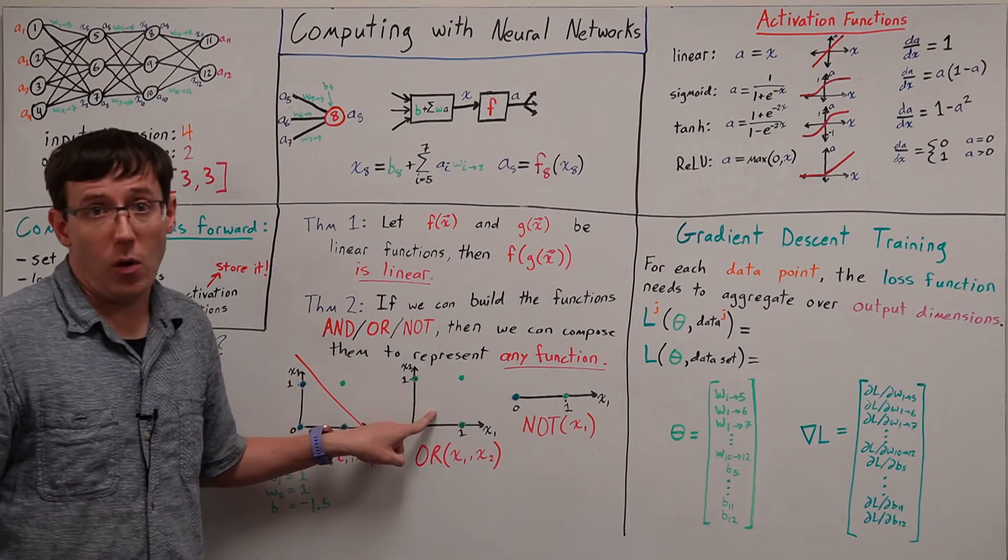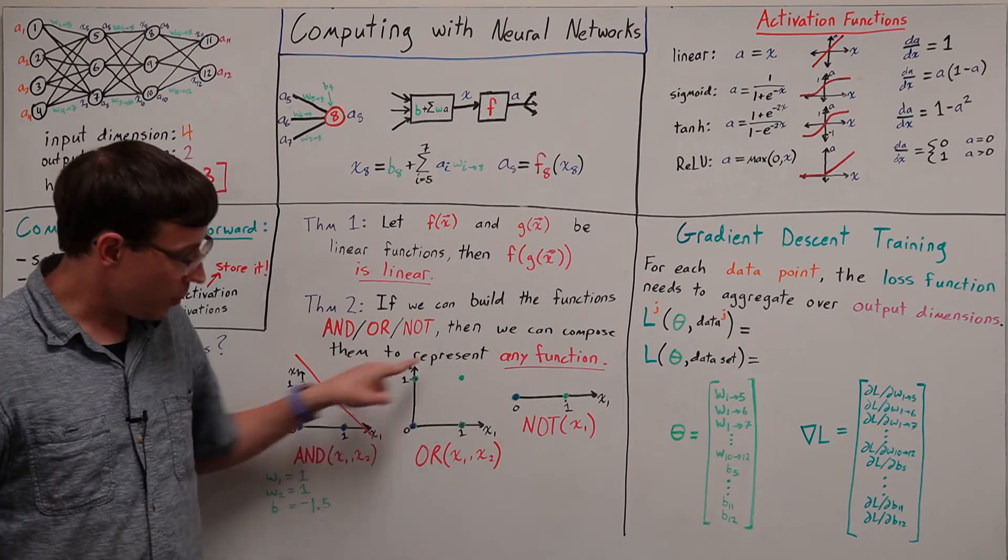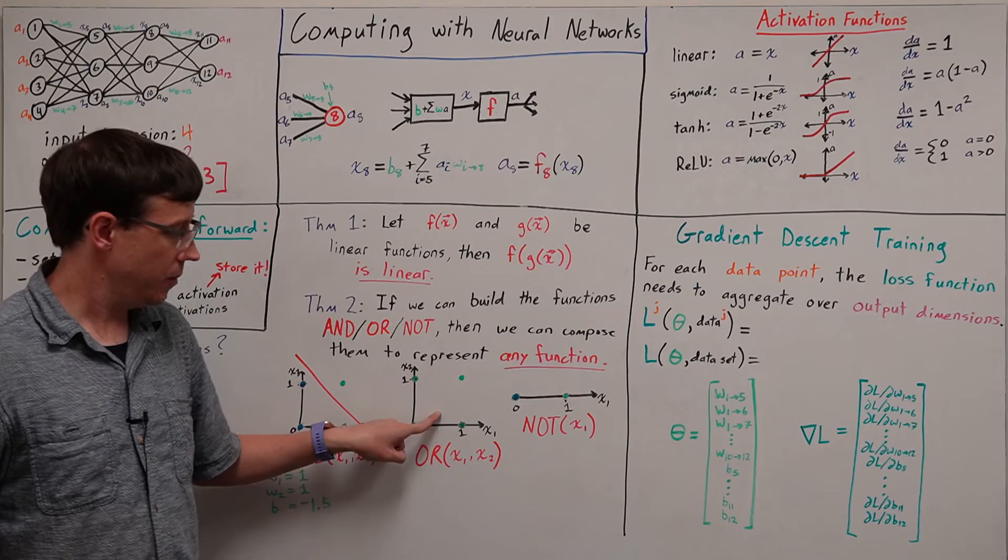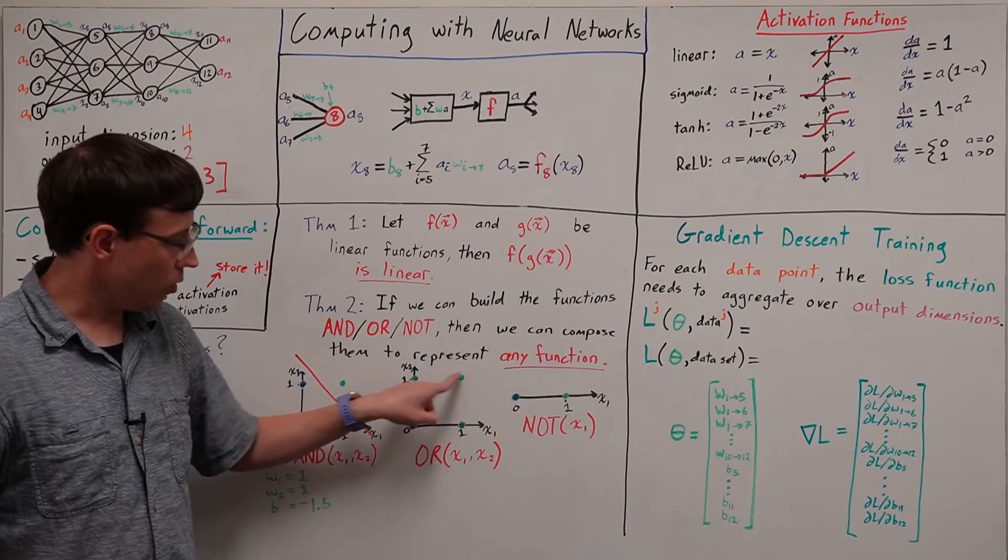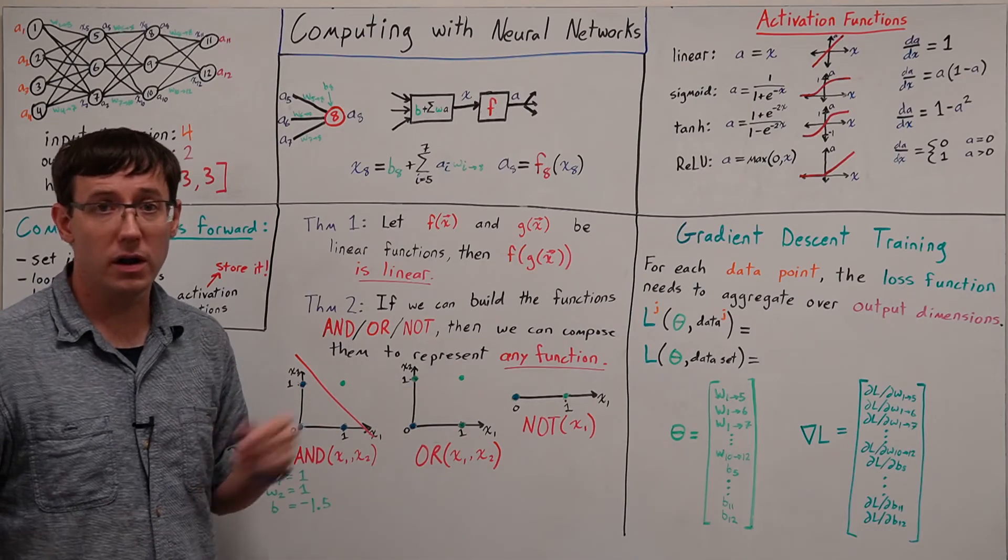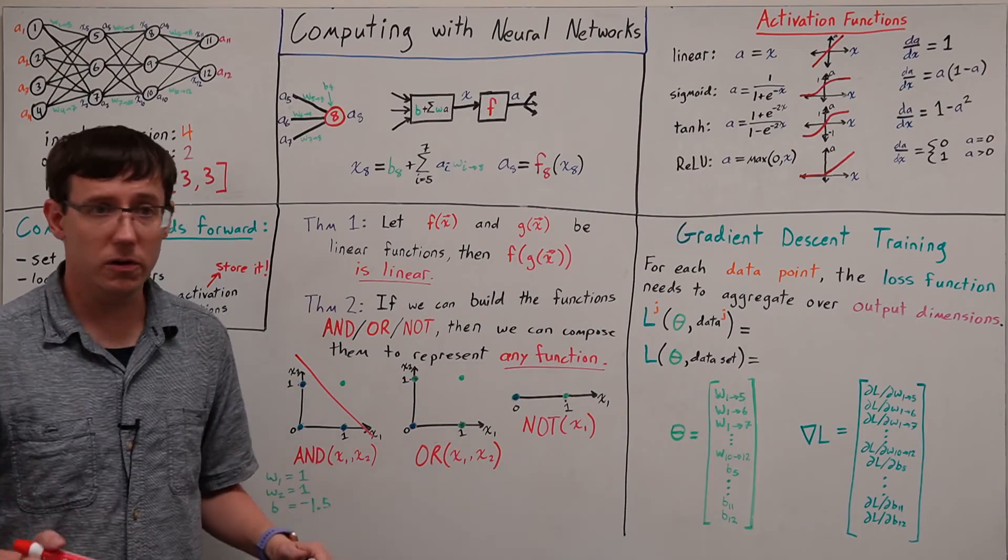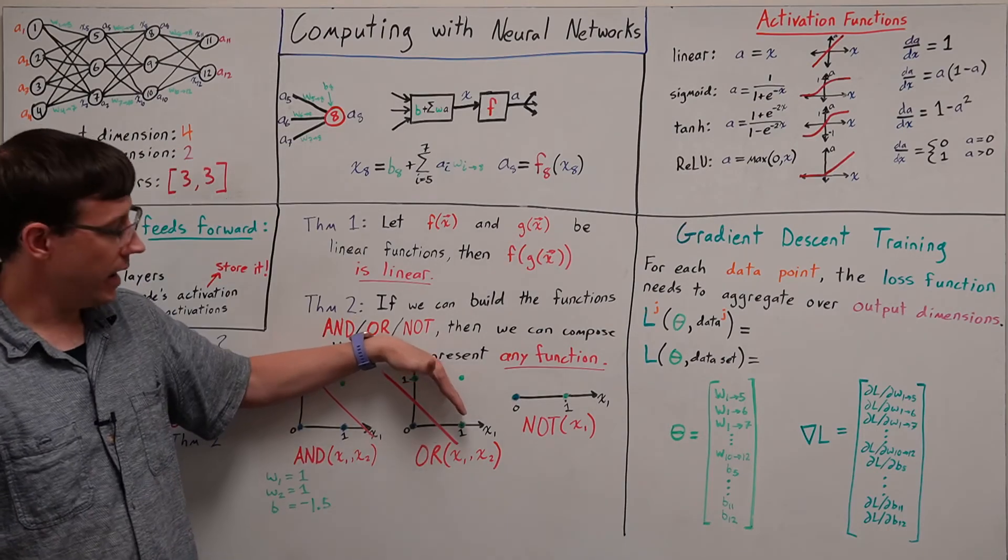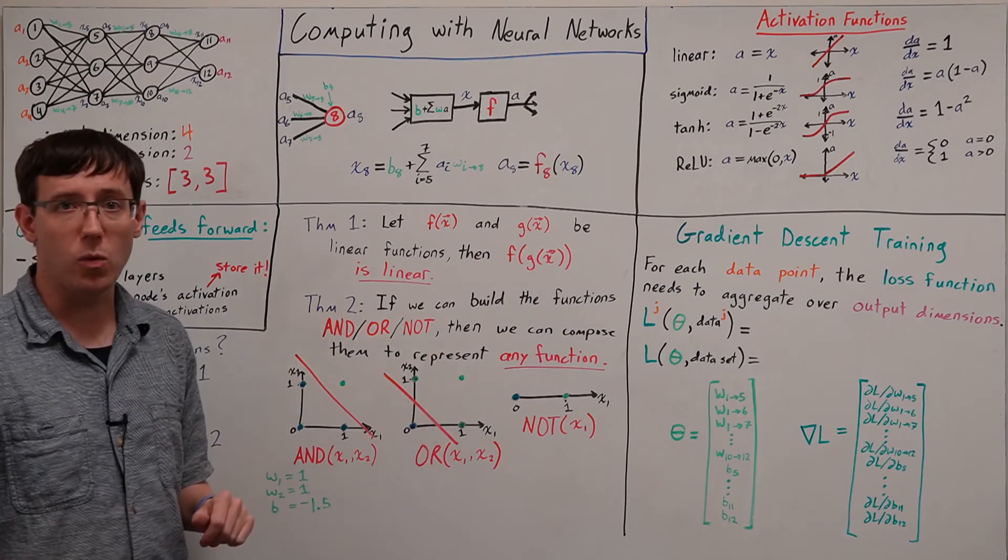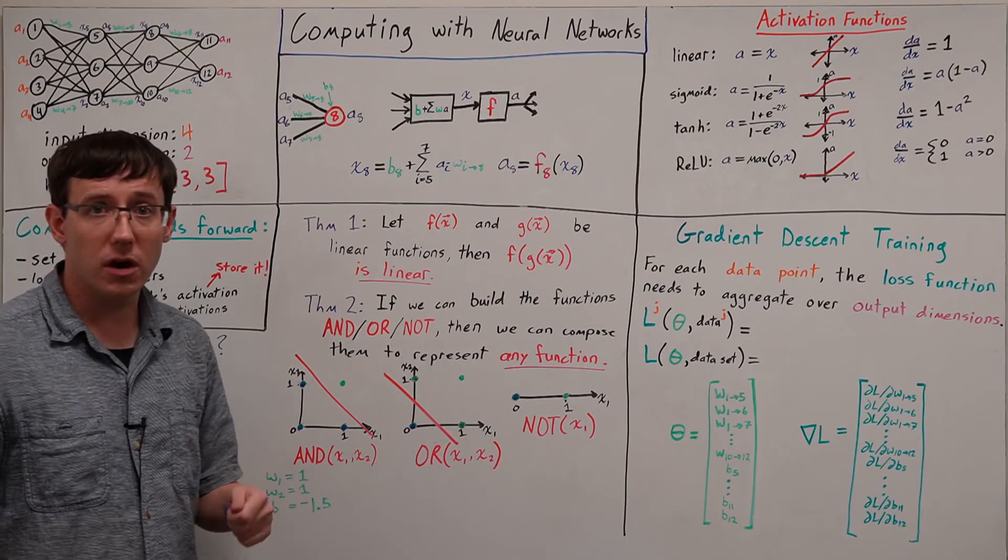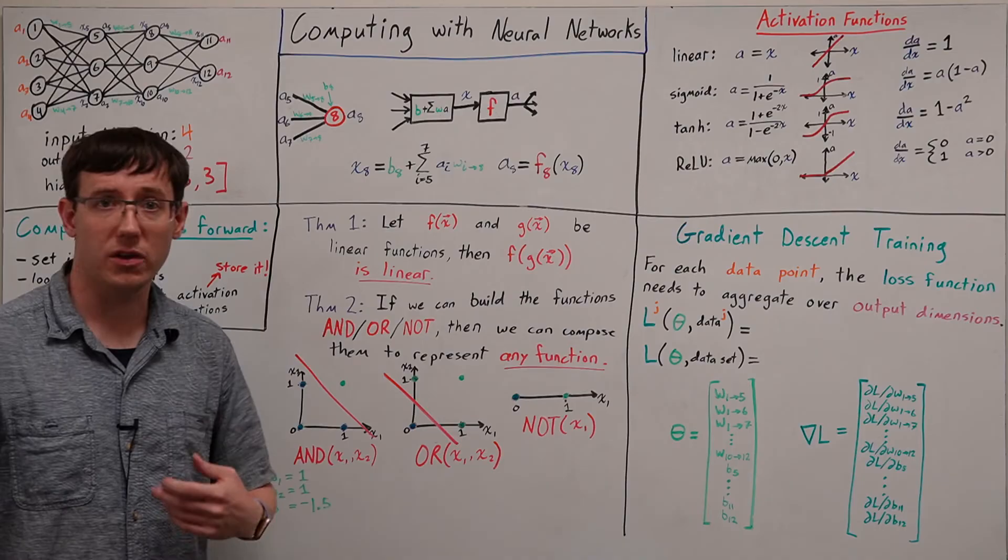Likewise, for the OR function, we can represent that on the 2D plane, but now, if either or both of the inputs is 1, we output a 1, and for this, we can construct a very similar neuron. Our decision boundary has just moved down by 1, and so we get weights of 1 and 1 and a bias of negative 1 half.